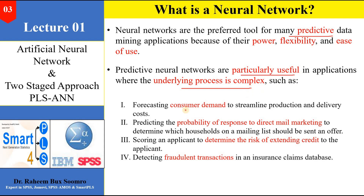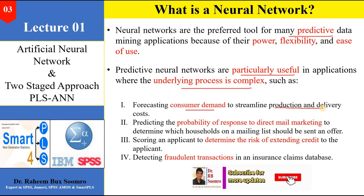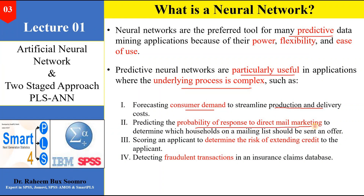For example, if you want to forecast consumer demand to streamline production costs, ANN can help you predict that demand. If you want to predict the probability of response to direct marketing offers sent to a particular household, ANN can help. Or if you want to score applicants and determine the risk of extending credit, or if you want to find out fraudulent or prevalent transactions, ANN can help in all these situations. There are many different applications of neural networks available.